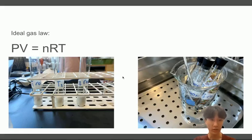Shown here is the equation PV = NRT. According to this equation, if volume changes, pressure changes too, which is why volume must be kept constant among all trials.